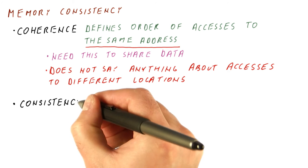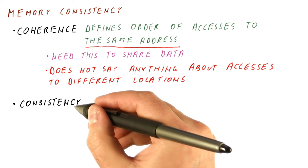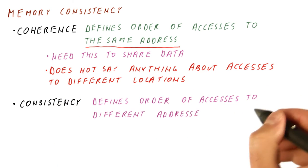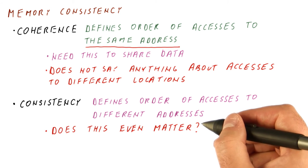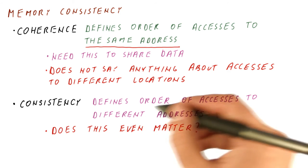And that is what memory consistency is about. It defines the order of accesses to different addresses. So the big question now, before we get into consistencies, does this even matter?